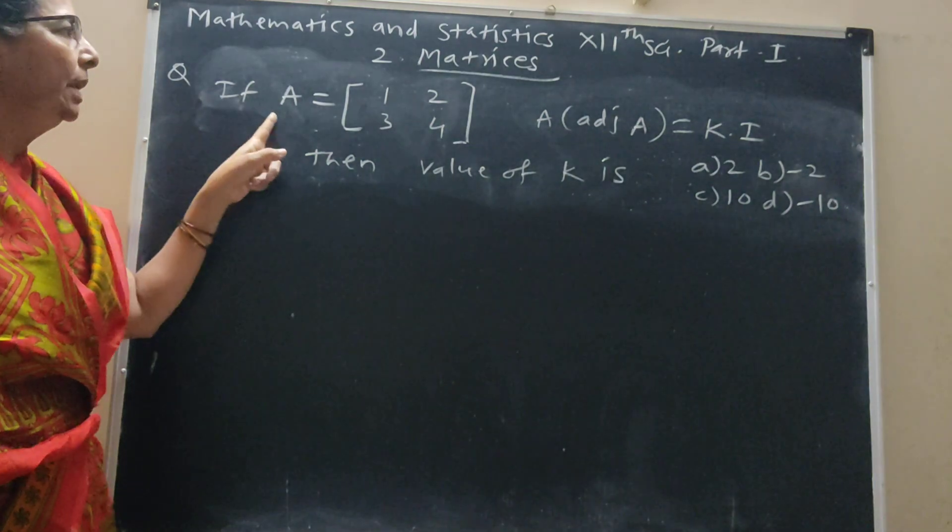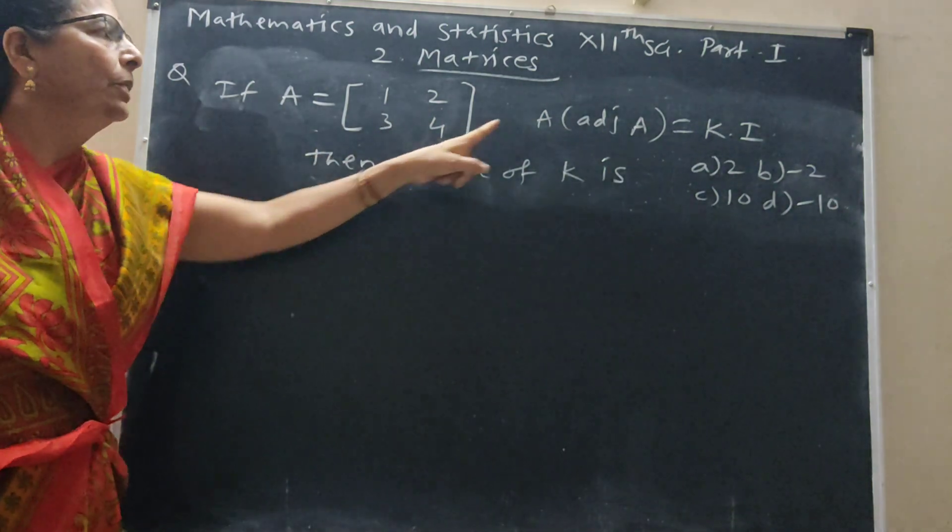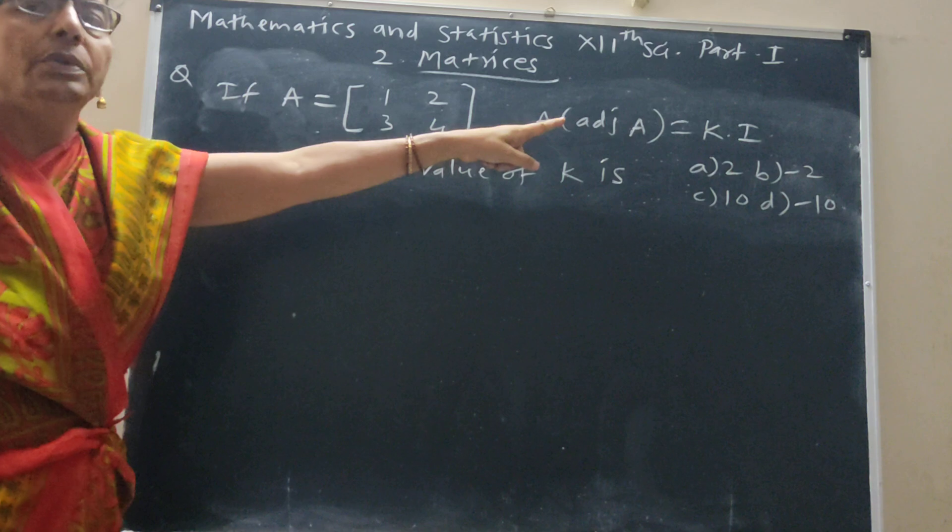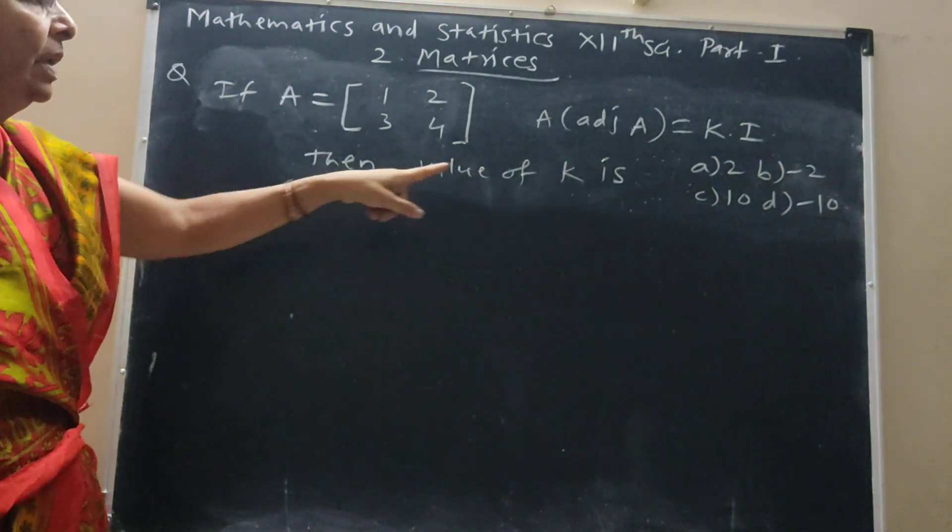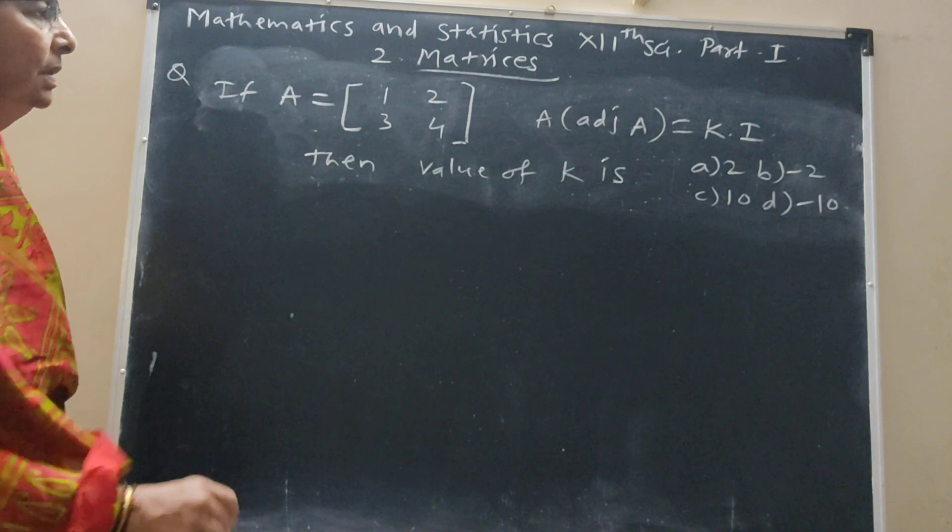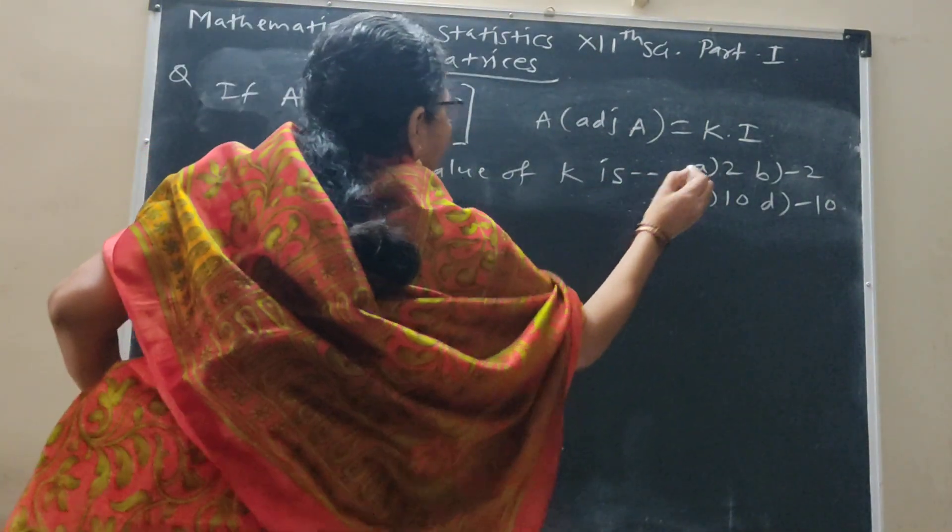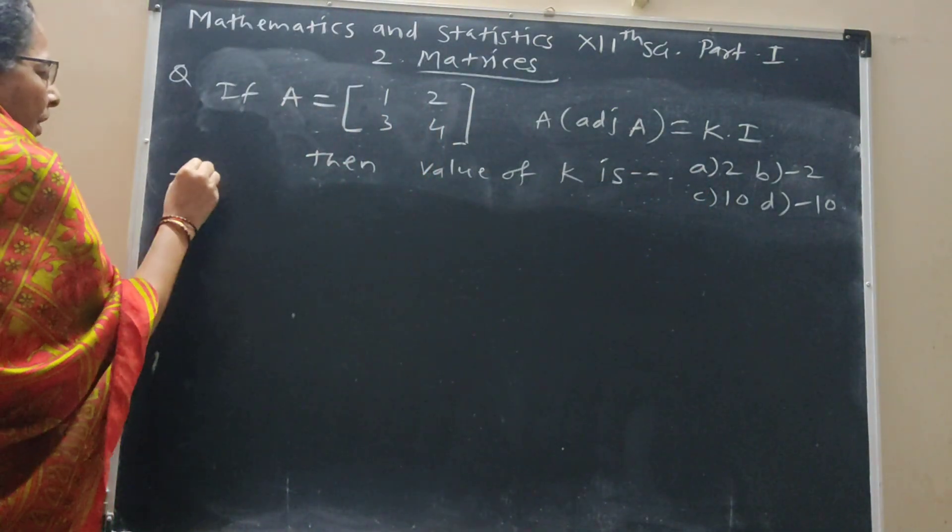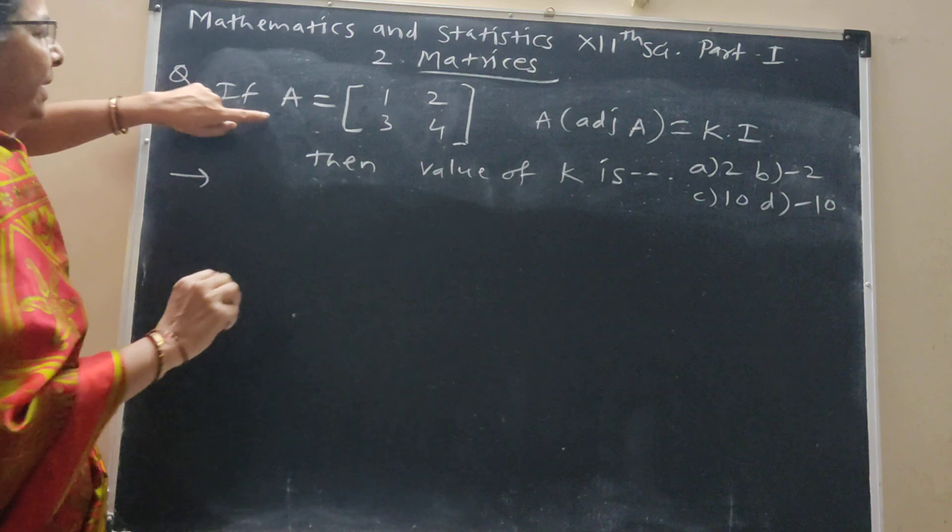Now question, if A is equal to [[1, 2], [3, 4]], A into adjoint A, then A is equal to A into k times I. Then when you have k, we have to find what the value of k is. Now for that, we have to find minor and cofactor.